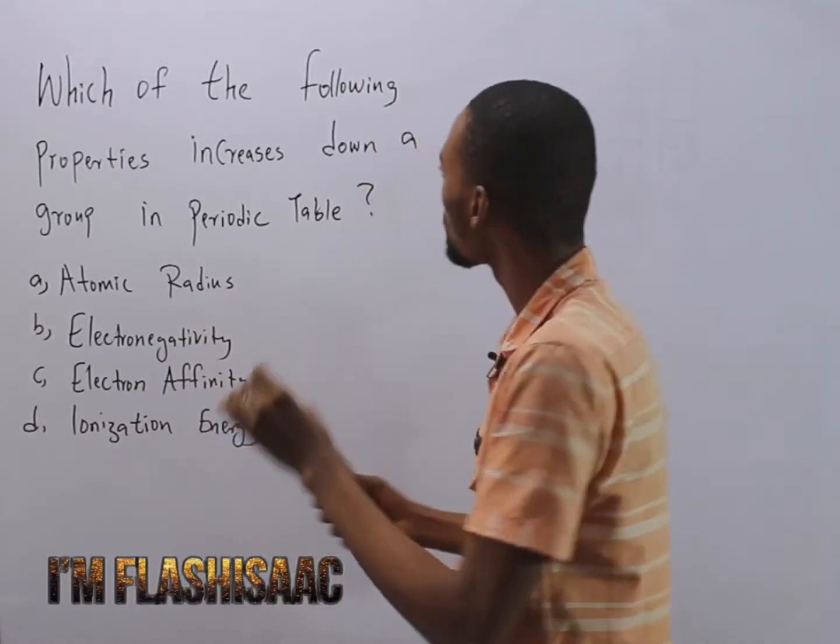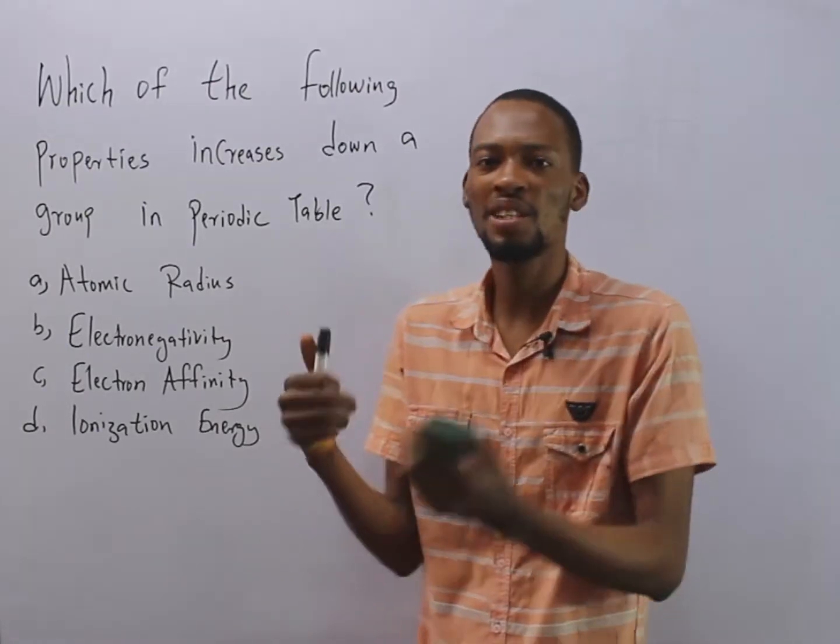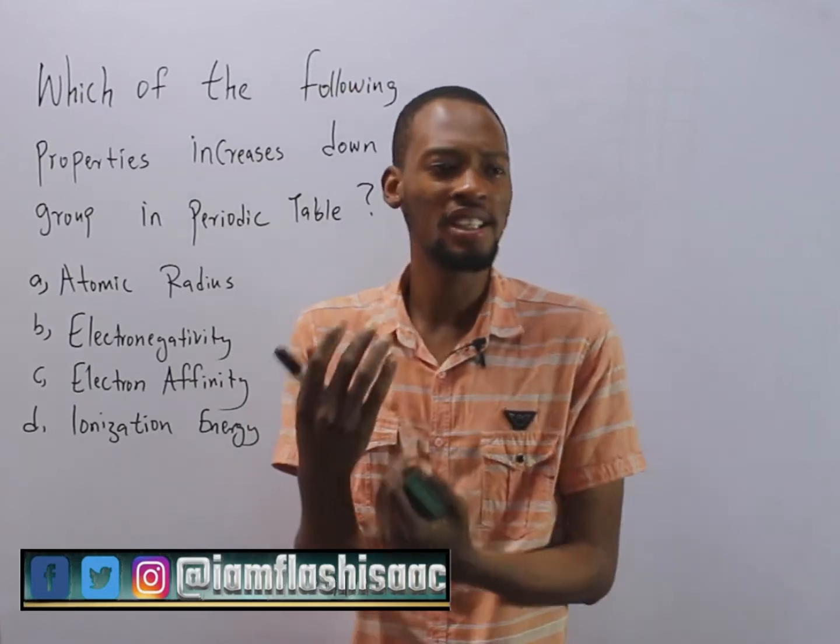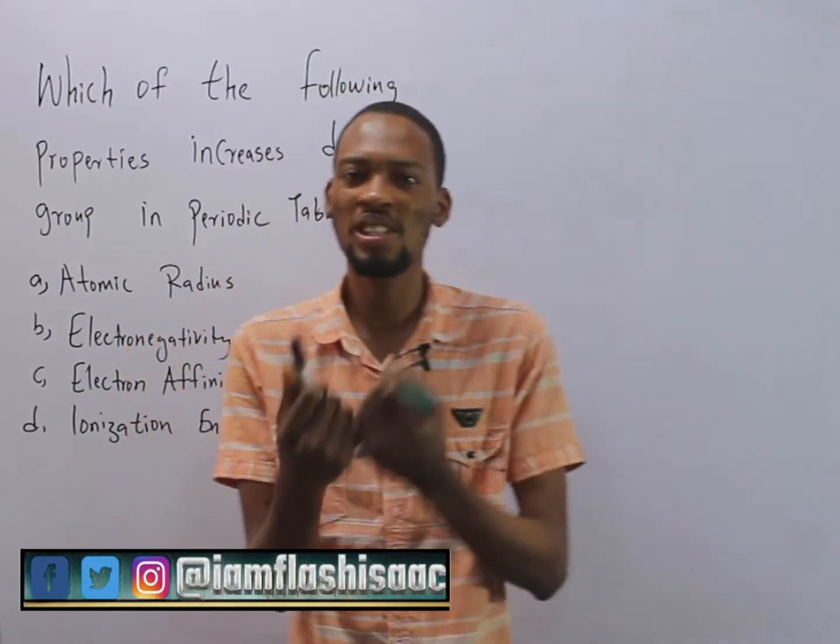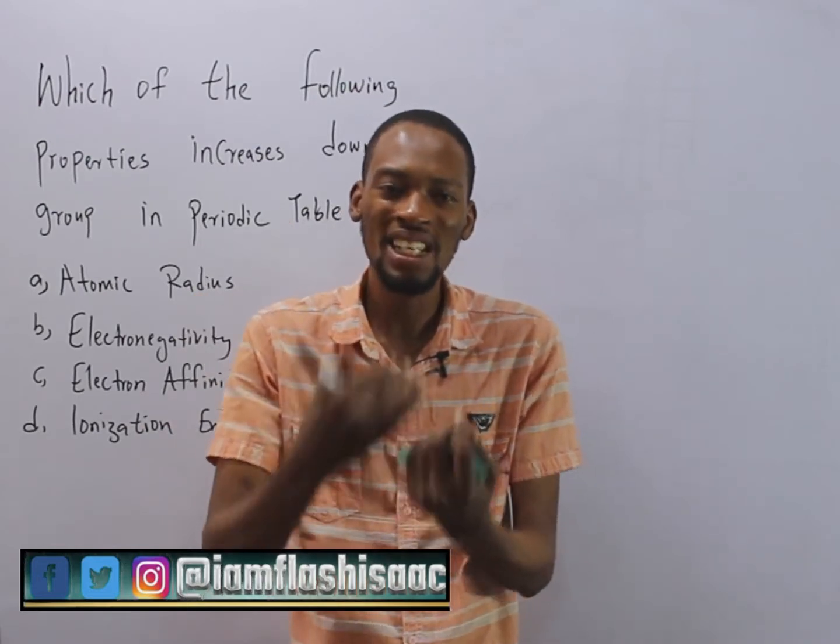It says which of the following properties increases down a group in periodic table? Periodic table is simply a table that shows the classification of elements according to their atomic number.